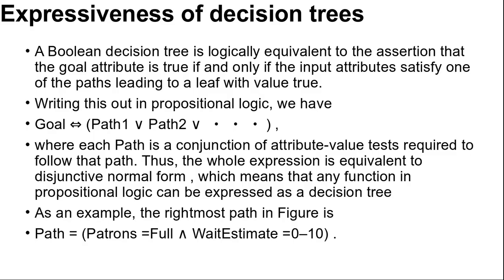Then expressiveness of decision trees. A boolean decision tree is logically equivalent to the assertion that the goal attribute is true if and only if the input attributes satisfy one of the paths leading to a leaf with value true.